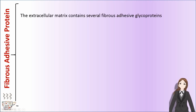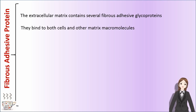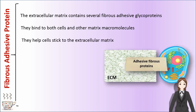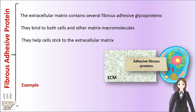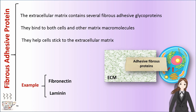The extracellular matrix contains several fibrous adhesive glycoproteins. They bind to both cells and other matrix macromolecules, and they help cells stick to the extracellular matrix. Two examples of fibrous adhesive proteins are fibronectin and laminin.